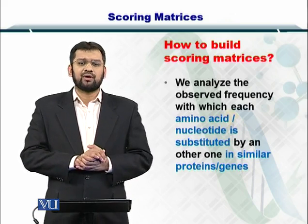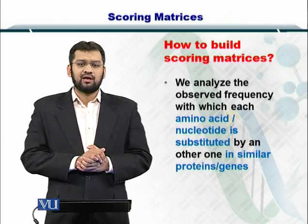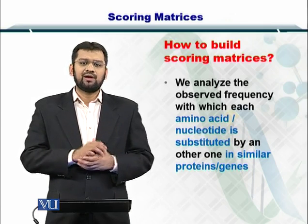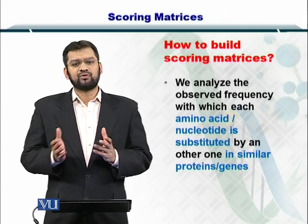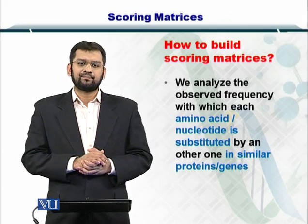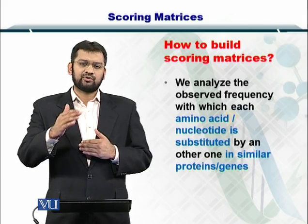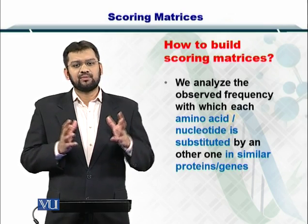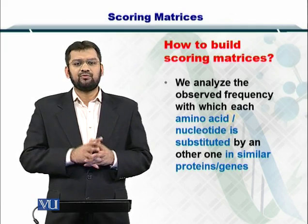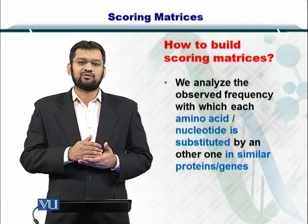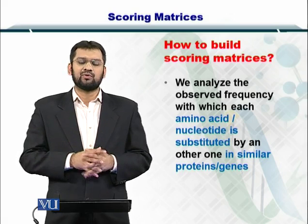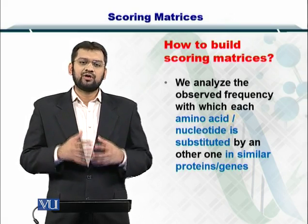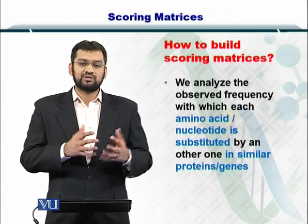How do we build these scoring matrices? What we do is look at protein sequences in nature and find those that are similar or homologous to each other. Once we have isolated a set of similar protein sequences, we see which amino acid in one sequence is substituted by which other amino acid in the other sequences. In this way, we build a frequency list of amino acids — that is, how frequently an amino acid is substituted by which other amino acid.